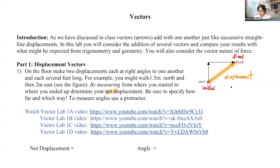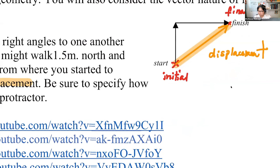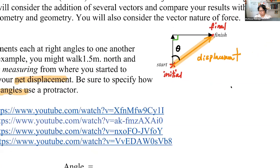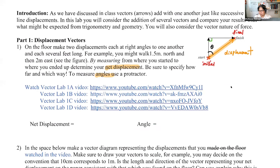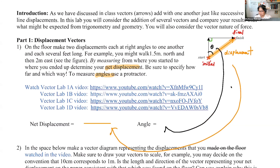You measure the net displacement and the angle. Use a protractor — for this lab you need to have a protractor. You're going to measure the angle theta here. Notice that this is a right triangle. So net displacement goes here, and the angle goes here. That's question one.